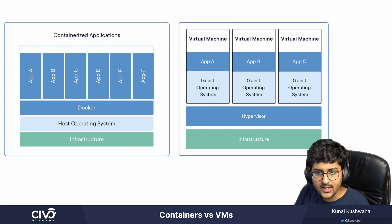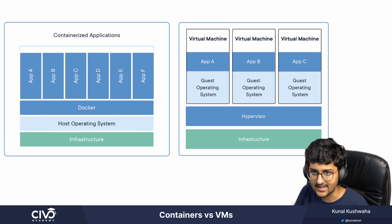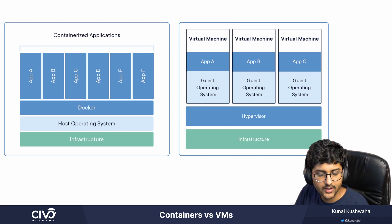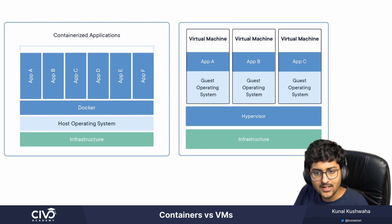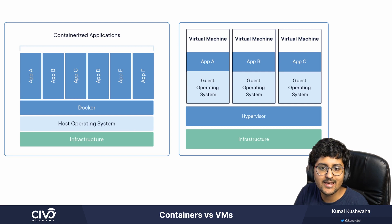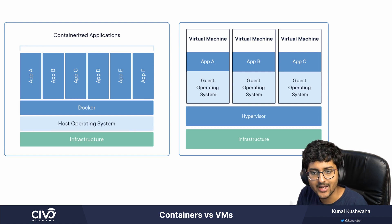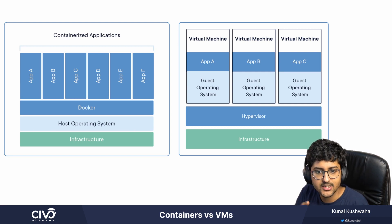On the screen, on the left-hand side, you can see containerized applications — app A, app B, app C. Then there's something called Docker, the host operating system, and then the infrastructure or your hardware. Containers, in simple terms, are basically abstracting at the app layer — packaging the code and the dependencies together.